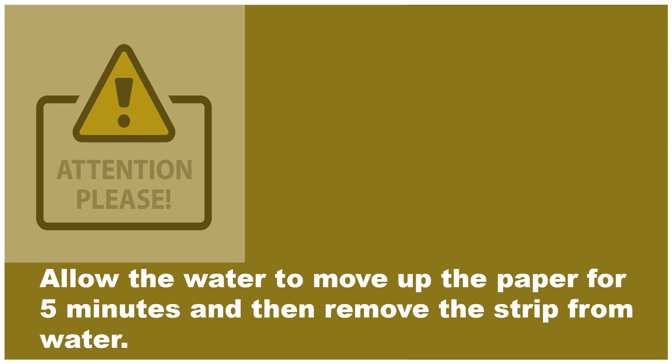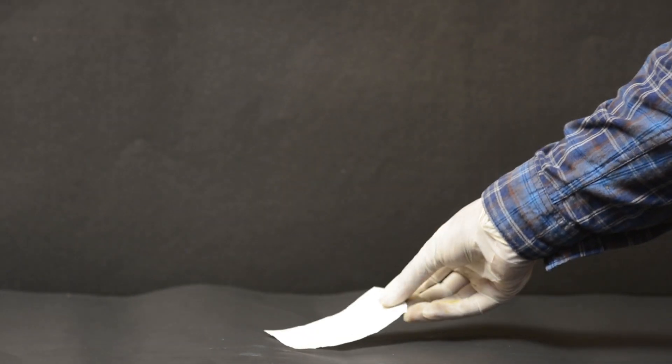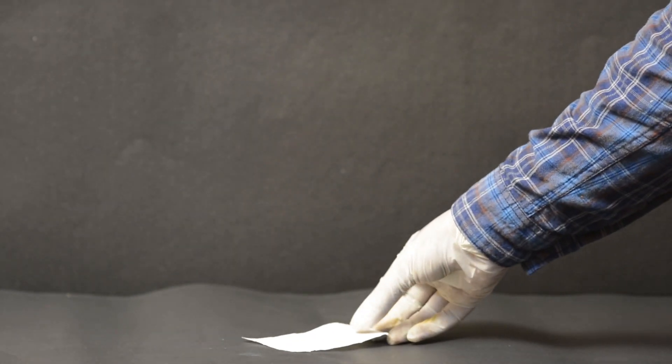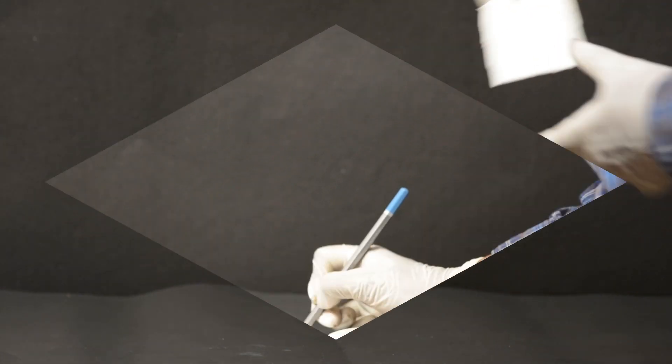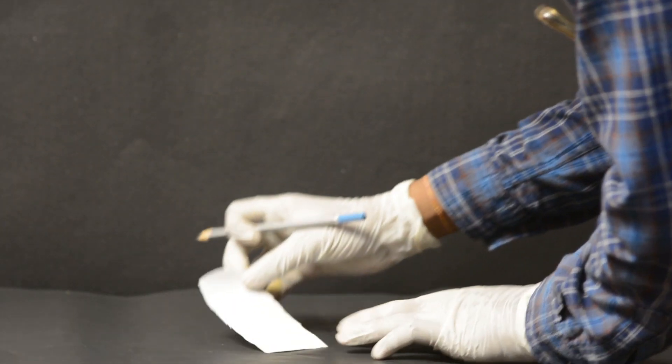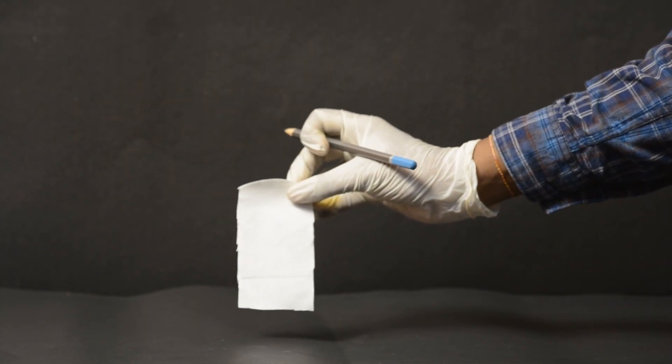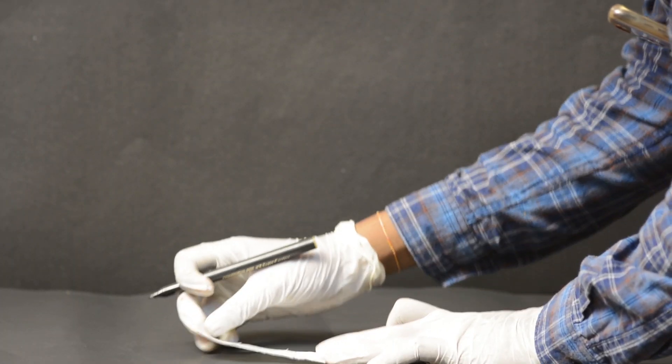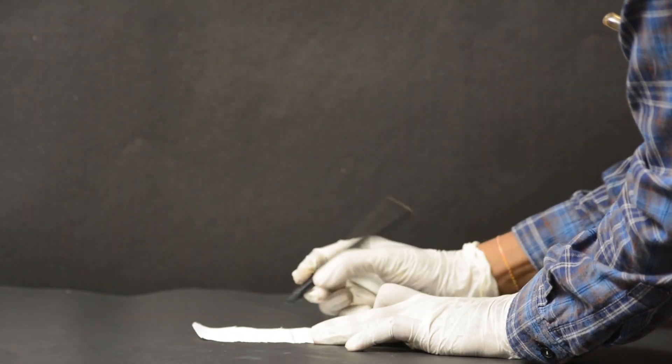Now it is time to see the procedure. Take a thin strip of filter paper - it acts as the stationary phase. Draw a line using a pencil about four centimeters above from the lower edge. Put a small drop of ink at the center of the line. Let it dry.